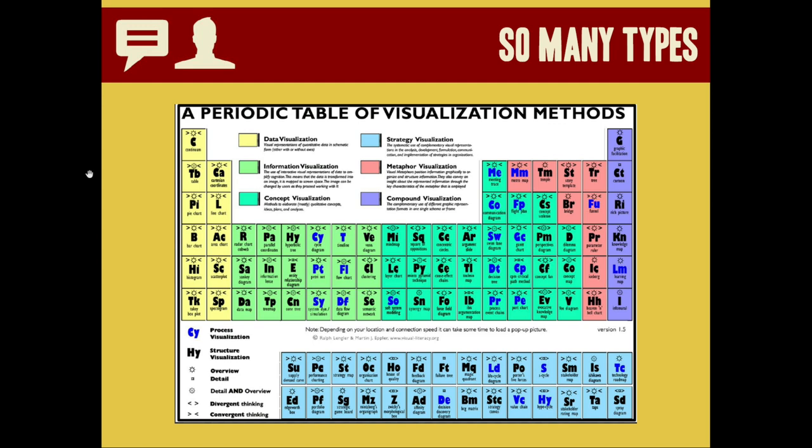This is the periodic table of visualization methods. It's available online and you can hover over some of these different method types to see an example and learn more about them. I bet you've never heard of a layer chart or a perspectives diagram before. You can take a look at this. It'll be linked with this video to understand some more complex ways you might visualize your data.